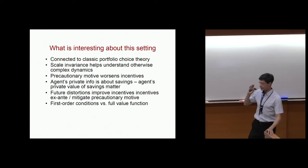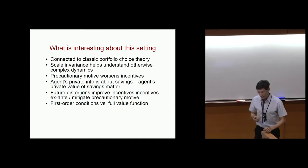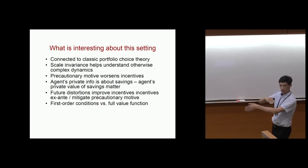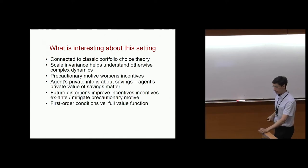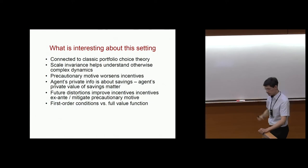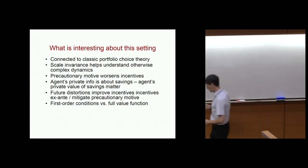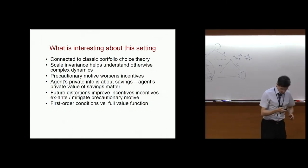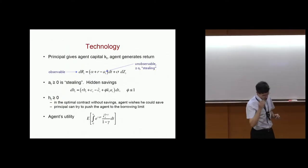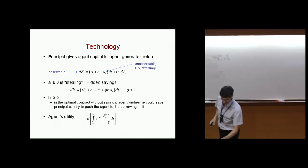In other words, the principal will commit to give the agent some safety in the future to reduce the precautionary motive, and this will improve incentives ex ante. Ex post, the commitment to safety is inefficient because the principal might want to make the agent work hard again and give him strong incentives. But from the ex ante point of view, this is optimal. This brings us back to the theoretical question of whether first-order conditions are sufficient or not.